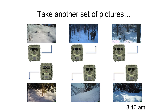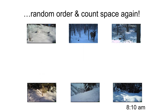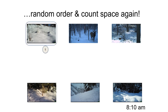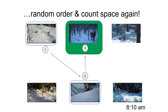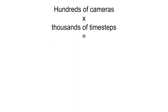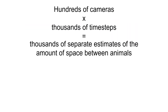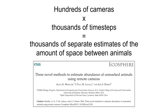We then take another set of pictures at the next time step — notice the time in the bottom right is 10 minutes later. We randomly mix up the camera order again so we're not always starting with the same camera, and sequentially count view sheds again until the species is detected. This time it takes three view sheds to detect an elk. We repeat this process across hundreds of cameras and thousands of time steps, which produces thousands of separate estimates of the amount of space between animals on the landscape. We then use those estimates and the mathematics described in a peer-reviewed publication to estimate both the average density of animals per camera and the total abundance of the species of interest in the study area.